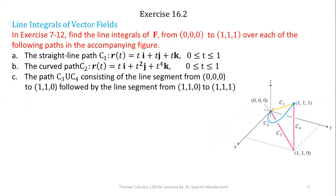This is the statement of the problem for questions 7 to 12 in exercise 16.2 of Thomas Calculus 12th edition. We have to calculate the line integral for three paths shown in the diagrams. The first path c1 has parameterization r(t) equals ti plus tj plus tk where t lies between 0 and 1, shown in yellow. The second path c2 is shown in blue. The third path is a combination of two straight lines c3 and c4. For question number 7, the force function is given as F equals 3y·i plus 2x·j plus 4z·k.